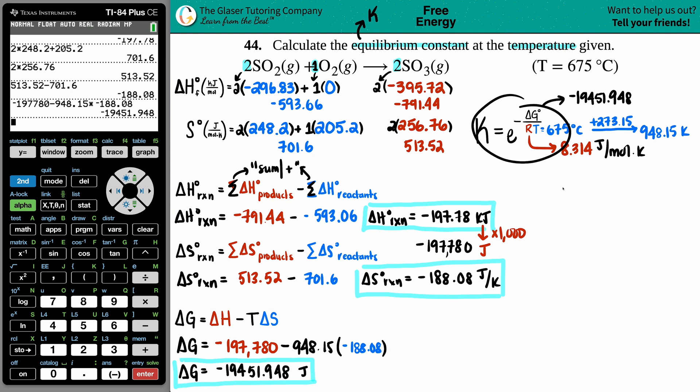Now I have all my variables. Let's solve: K = e^(-ΔG/(RT)). The ΔG was -19,451.948, and I have my two values on the bottom: the 8.314 and my temperature which is 948.15.